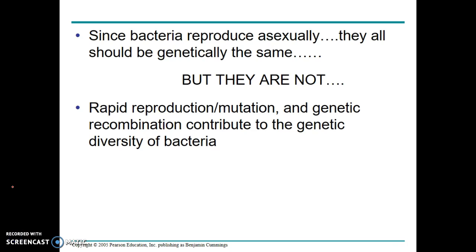The process of bacteria reproducing by itself produces no genetic variability — if they just replicated their DNA, they would be genetically the same. But bacteria are very different from each other. The three ways bacteria gain genetic variability are: rapid reproduction and mutation, genetic recombination, and transformation.